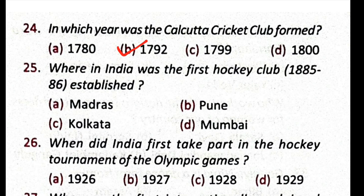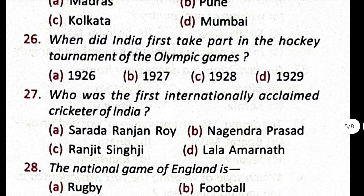Question number 25: where in India was the first hockey club established in 1885–86? The correct answer is C, Kolkata. Question number 26: when did India first take part in the hockey tournament of the Olympic Games? The correct answer is C, 1928. Question number 27: who was the first internationally acclaimed cricketer of India? The correct answer is C, Ranjit Singhji.